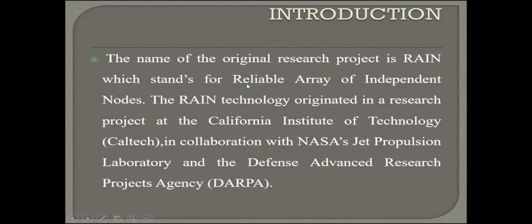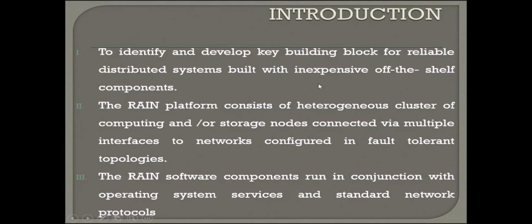which is called Reliable Array of Independent Nodes. This is originally a research project of Caltech, California Institute of Technology, in collaboration with NASA's Jet Propulsion Laboratory and DARPA. RAIN is to identify and develop key building blocks for reliable distributed systems built with inexpensive off-the-shelf components.